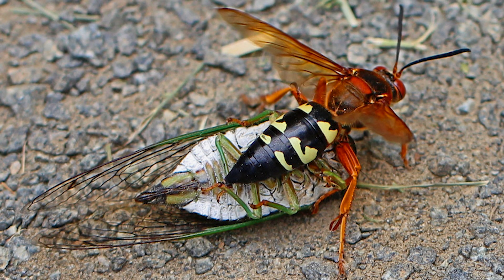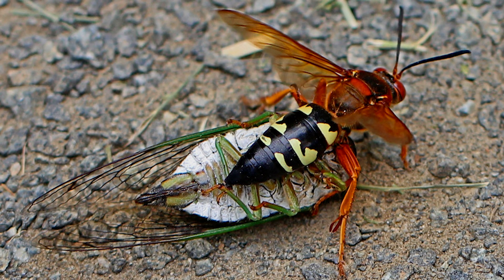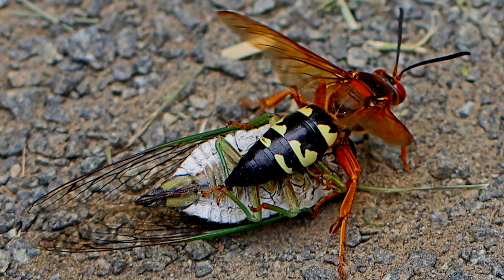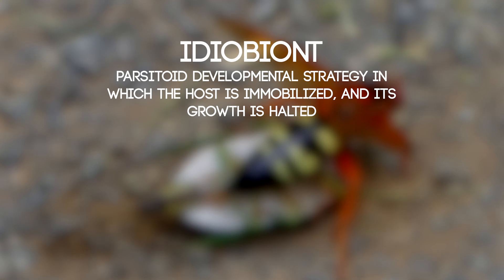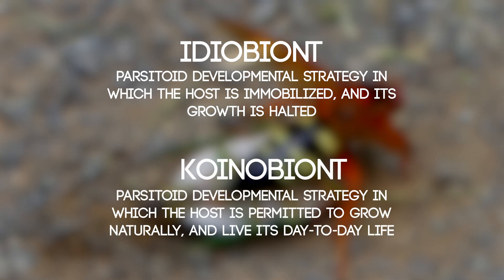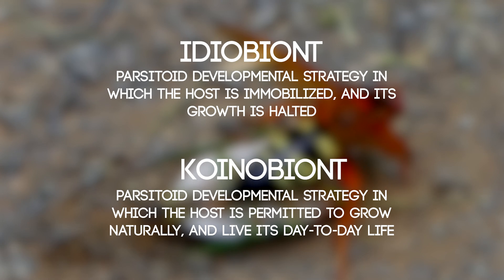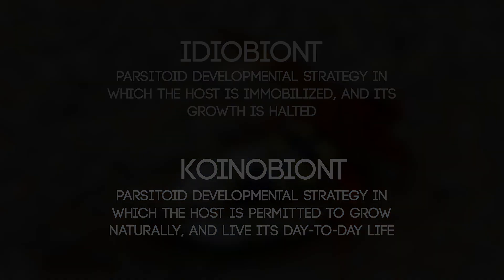Parasitoids vary among themselves in the degree to which they subdue their hosts. Some, like Sfecius speciosus wasps, are idiobionts, which means that they prevent the development of the host, typically using steroid molecules injected with the paralyzing toxin. Coinobionts, on the other hand, allow the host to go about its typical developmental and metabolic processes while being internally fed on by the young. Typically, idiobiont species are ectoparasites, while those with coinobiont strategies are endoparasites.